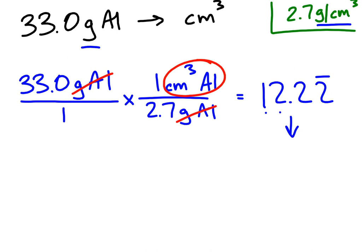So 1, 2, 3. I look at the next number. It's a 2. It's not enough to round that up. So 12.2 cubic centimeters. All right, so what does that mean? That means if I have 33.0 grams of aluminum, it's going to take up 12.2 cubic centimeters of space.